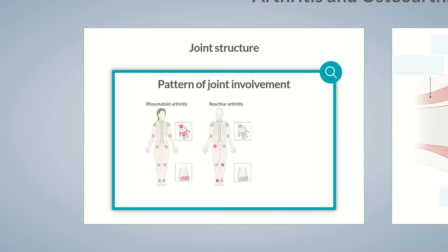On the other hand, the most commonly affected joint in gout is the metatarsophalangeal joint. As you can see, each condition demonstrates a characteristic pattern of joint involvement. The presentation of this pattern can sometimes vary. This leads us to the aim of this series on rheumatic disease: to recognize these patterns.